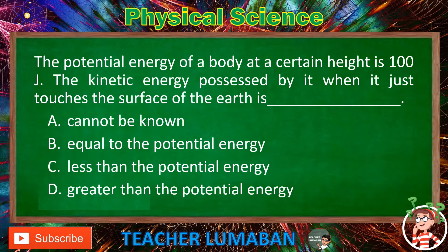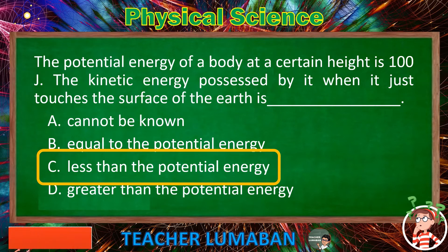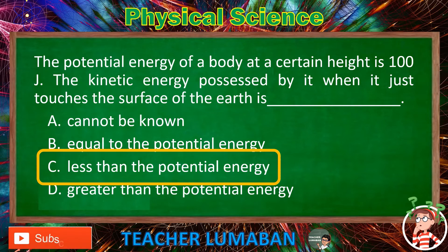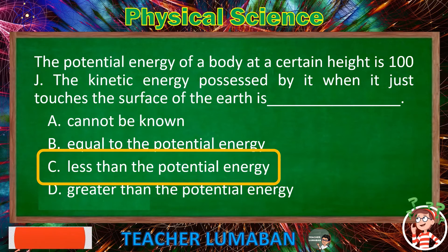The correct answer is letter C — less than the potential energy. The potential energy of a body at a certain height is 100 J. The kinetic energy possessed by it when it just touches the surface of the earth is less than the potential energy.